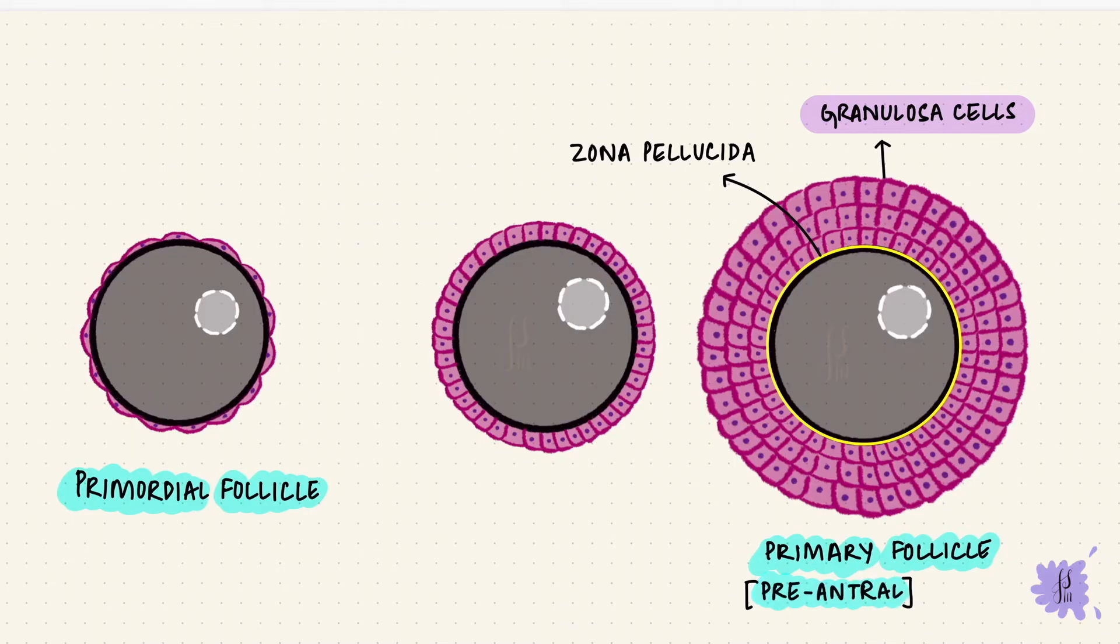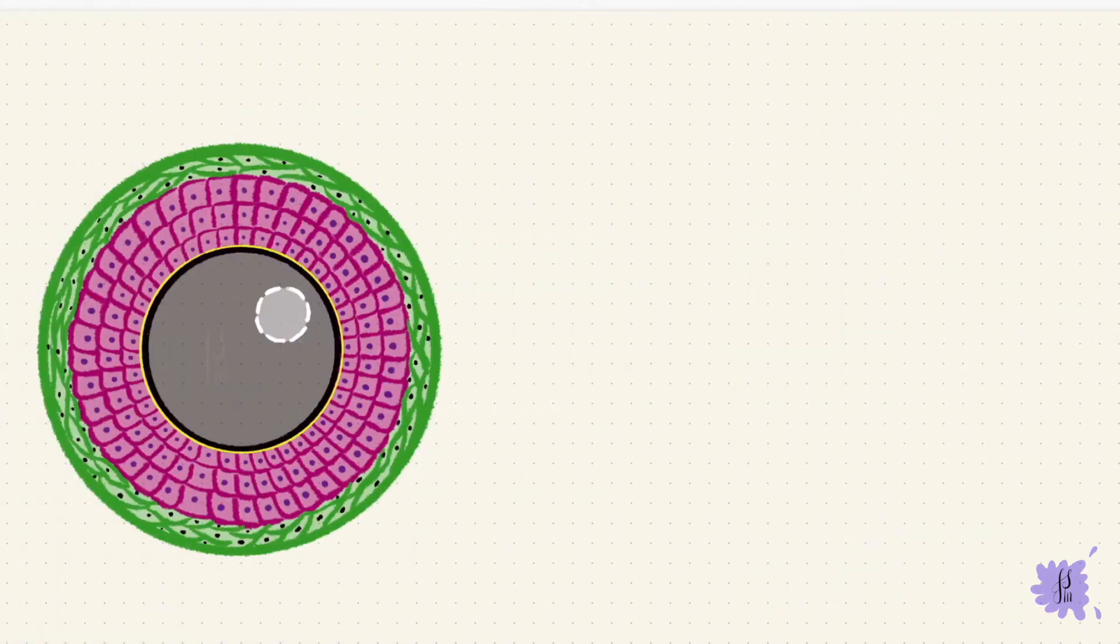The granulosa cells have FSH receptors. Under the influence of FSH, some of the follicles grow. There are more granulosa cells, and a new cell layer gets added around it from the interstitium of the ovary. This is the theca folliculi, which has the theca interna inside and the theca externa outside. The theca externa is connective tissue forming the capsule around the follicle. The theca interna is more like the granulosa cells, so they are secretory.